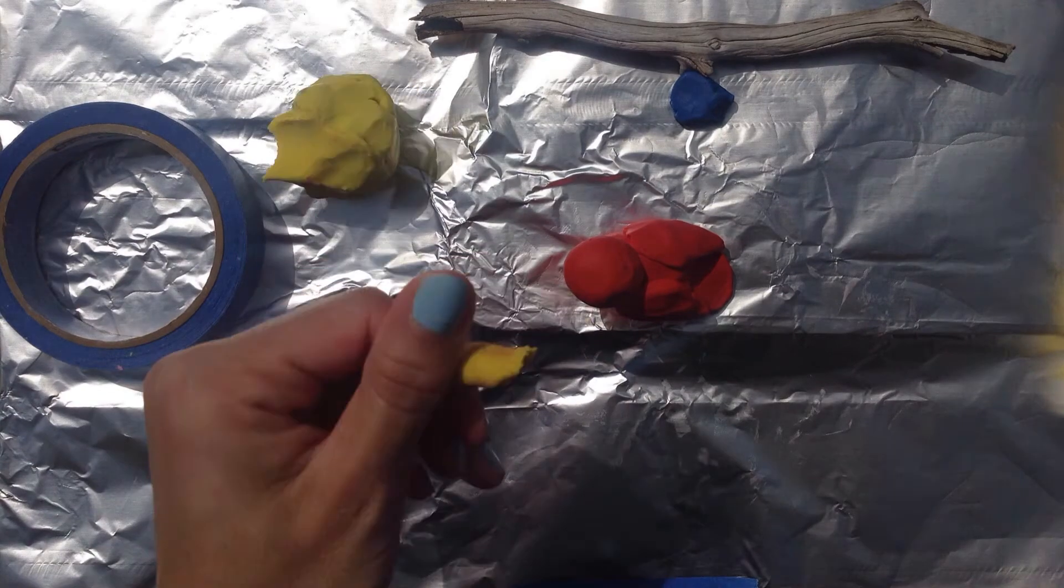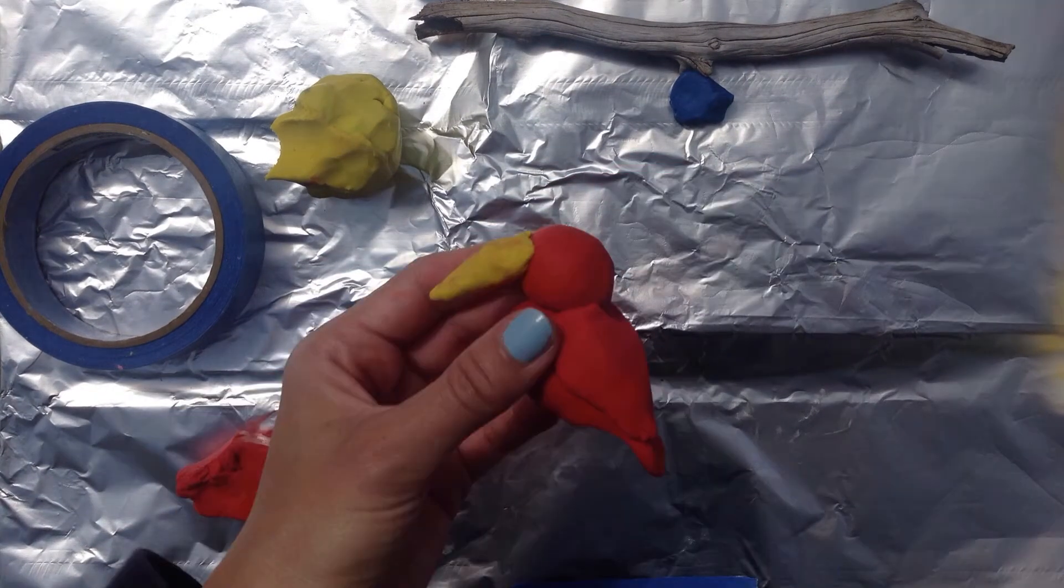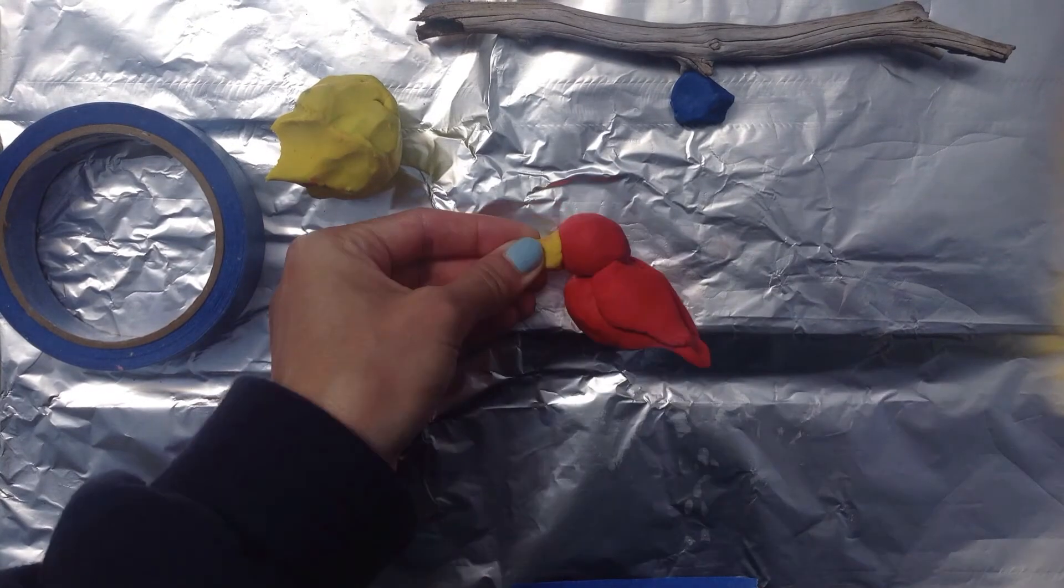Make a cone shape, kind of like we make the snakes for the bill. Way too big so we're going to pinch some off.